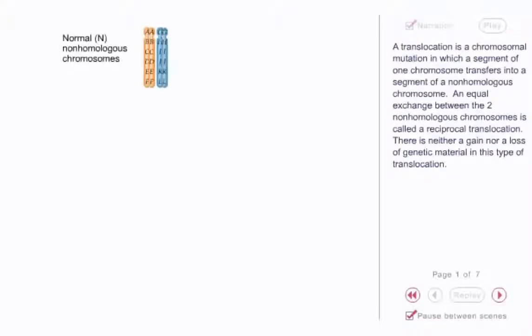A translocation is a chromosomal mutation in which a segment of one chromosome transfers into a segment of a non-homologous chromosome. An equal exchange between the two non-homologous chromosomes is called a reciprocal translocation. There is neither a gain nor a loss of genetic material in this type of translocation.